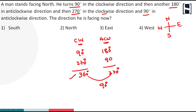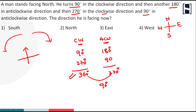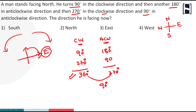Since 90 degrees is highest in the clockwise direction, and the person is facing north, we rotate 90 degrees clockwise. That direction is east side. So option three is the right answer. Is it clear?